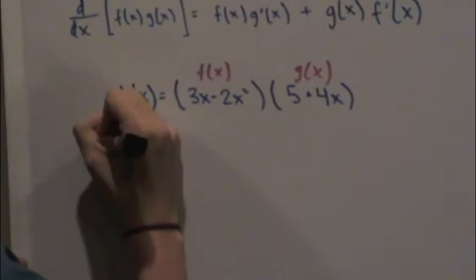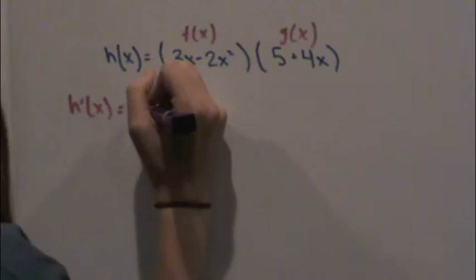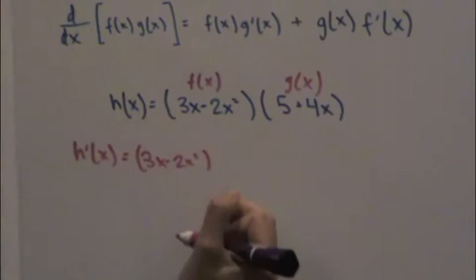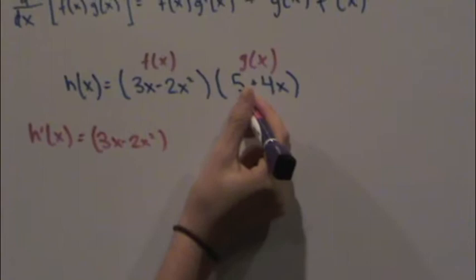So h'(x), you bring this down, 3x minus 2x squared, multiply it by the derivative of this function. This becomes 0 because it's a constant, and this derivative is 4.